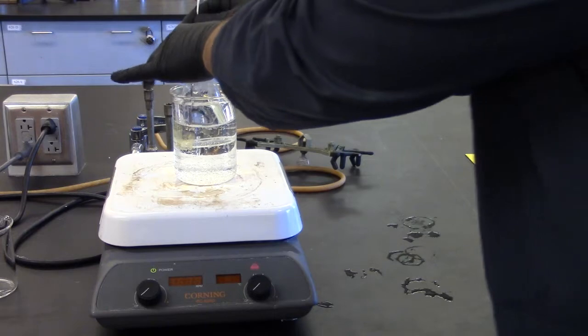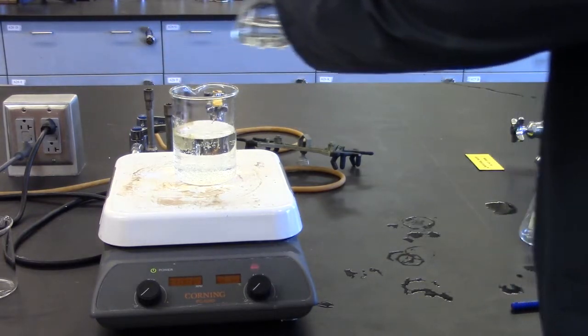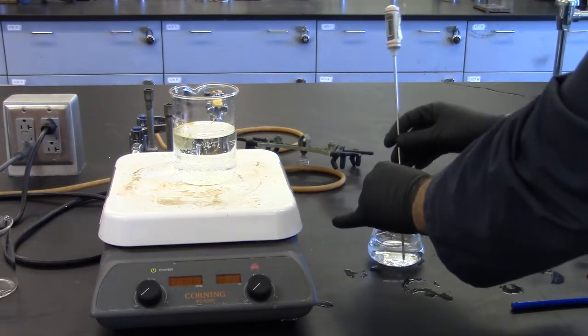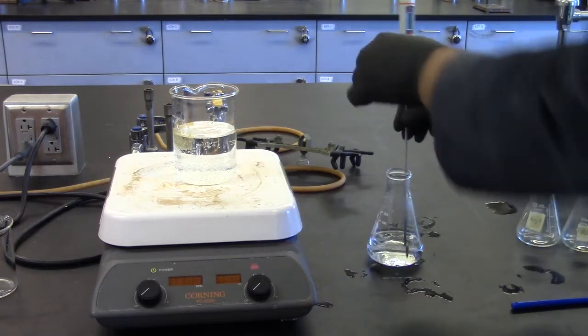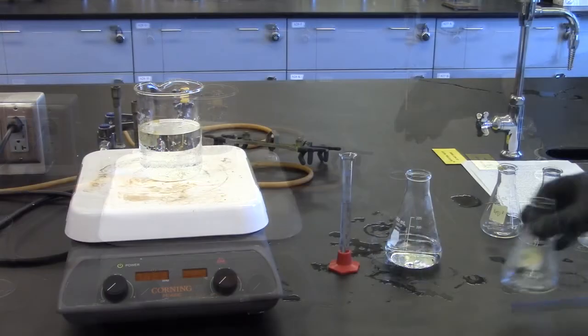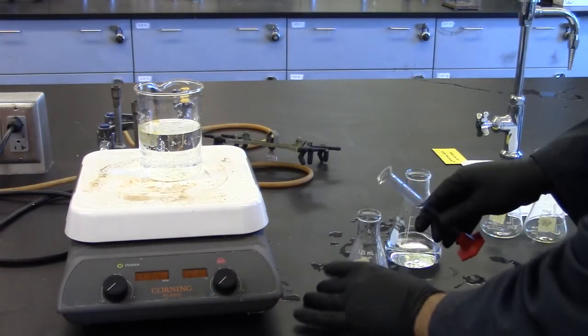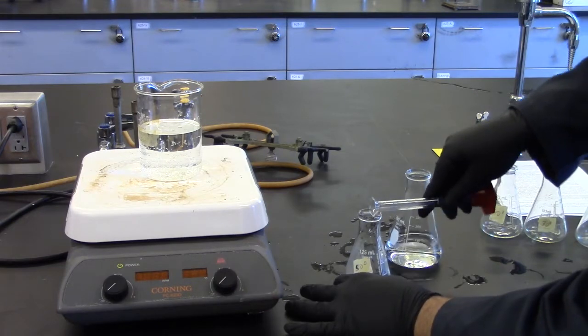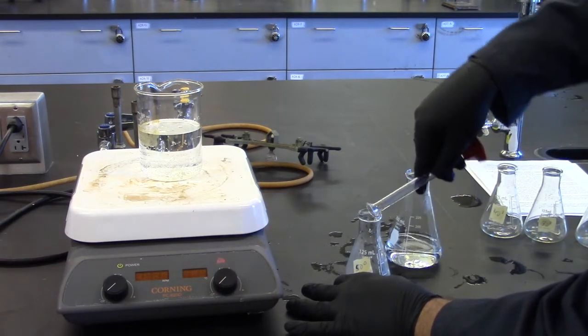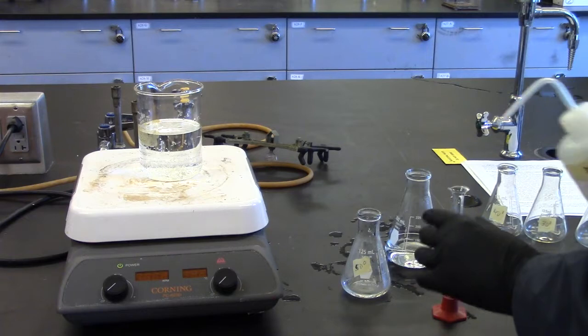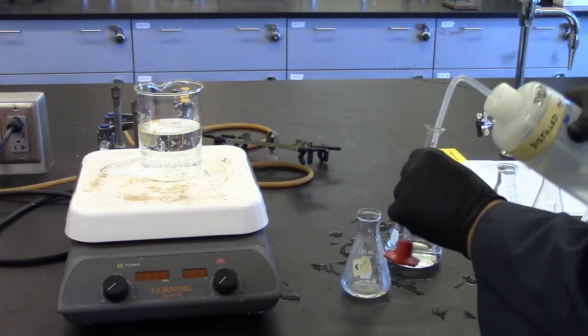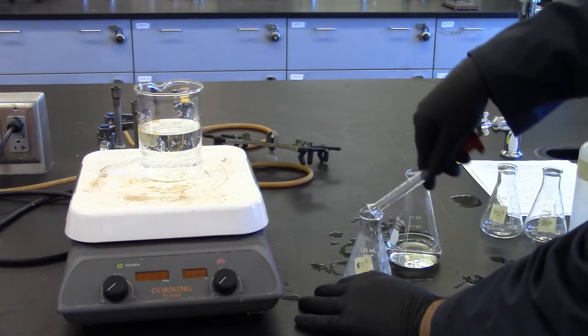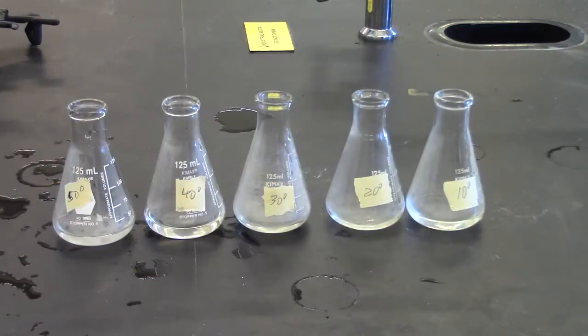Now, remove the flask from the bath and let it cool gradually, swirling it frequently, and monitor its temperature. Transfer this solution into your first flask marked 50 degrees Celsius. There may be borax left in the cylinder. Rinse this with distilled water and add to the flask.